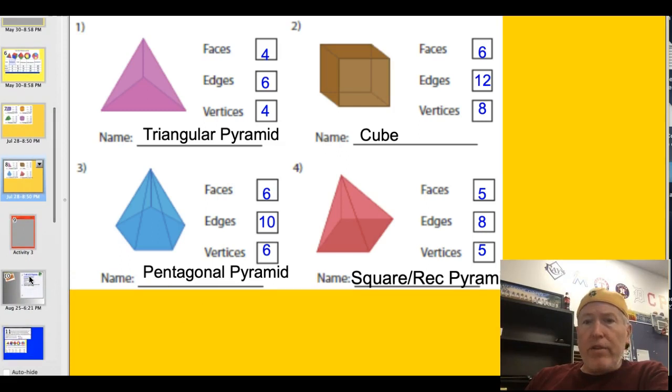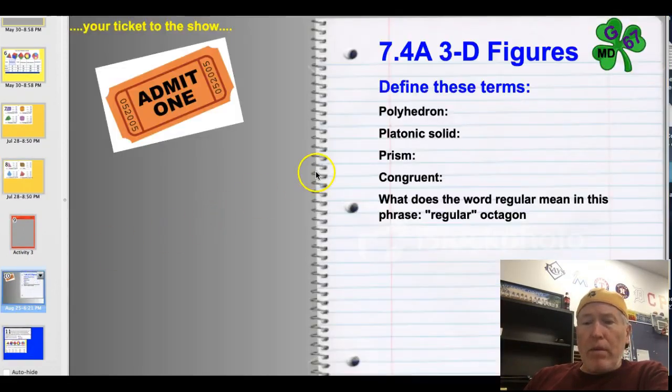Well, you ready for the ticket? Ticket to the show. It's a very vocabulary-based ticket to the show. Polyhedron, platonic solid, prism, congruent. What does the word regular mean in the phrase regular octagon? Please define these terms.